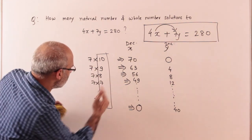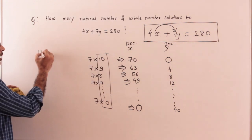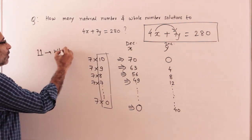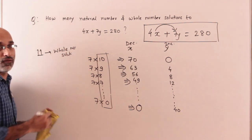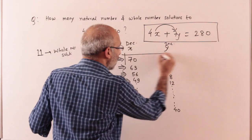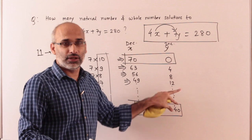If you count it, there are many possibilities between 0 and 10. Starting from 0 to 10, there are 11 possibilities, and that will be the whole number solution.